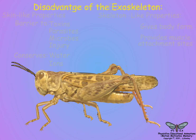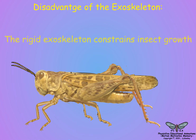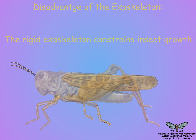However, a rigid insect exoskeleton constrains insect growth, and therefore insects must undergo periodic molting of the cuticle, at which time a new larger cuticle is formed into which the immature insect is able to grow during the intermolt period.